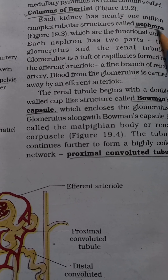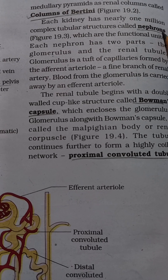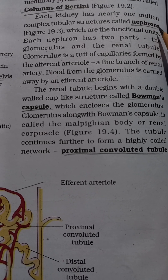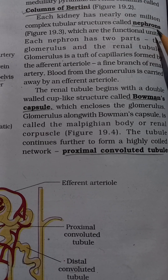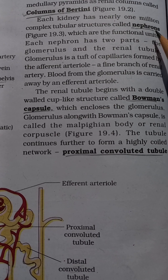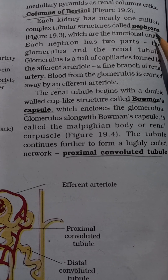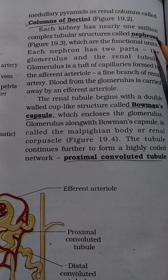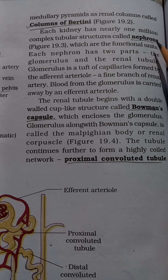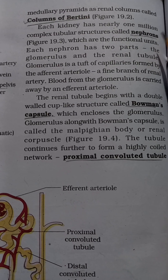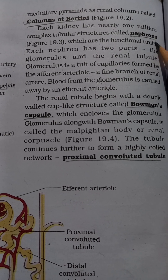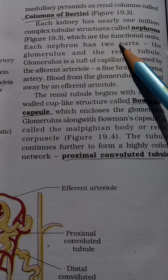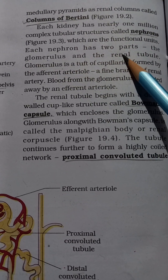The functional and structural unit of the kidney is the nephron — this is something we have studied many times. In competitive exams, if the question is straightforward it is easy to answer. The nephron has two main parts: the glomerulus and the renal tubule, also called the Malpighian tubule.